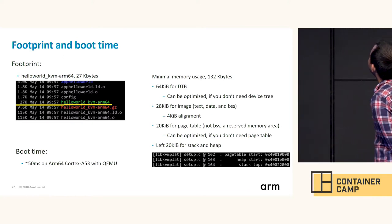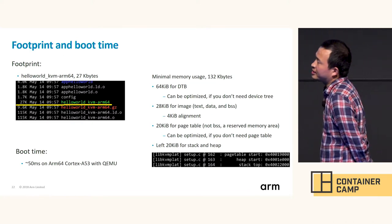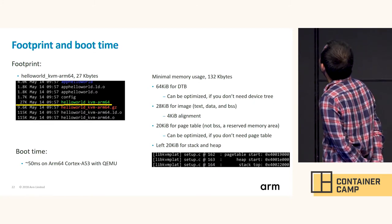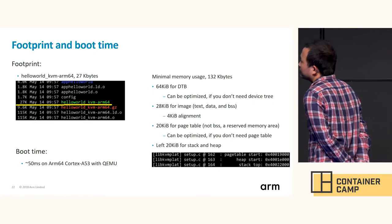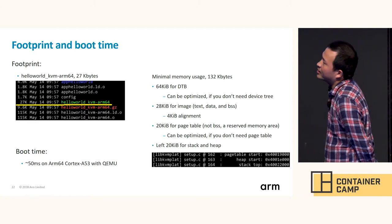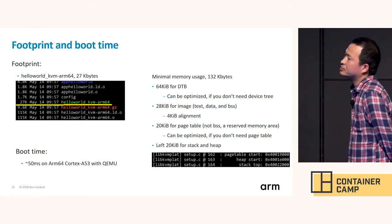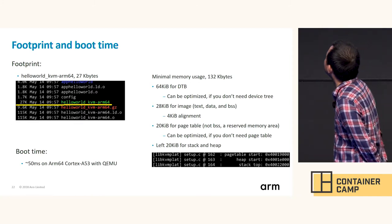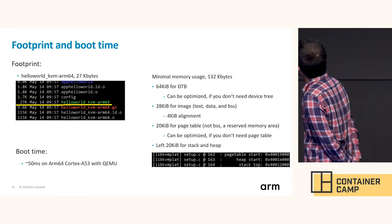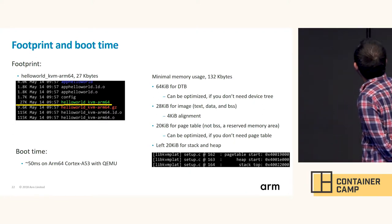28 kilobytes for the image including text, data, and BSS sections. The image currently requires 4-kilobyte alignment because we use the MMU to protect the data. And 20 kilobytes for page tables.